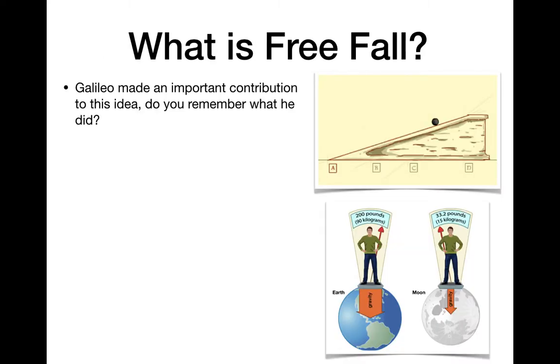When we're talking about free fall and objects falling, it's been a topic of discussion among physicists and scientists and natural philosophers for many thousands of years. Galileo was one person who contributed this idea of our understanding of free fall of falling objects, and he had a really important contribution. Can you remember what that contribution was?